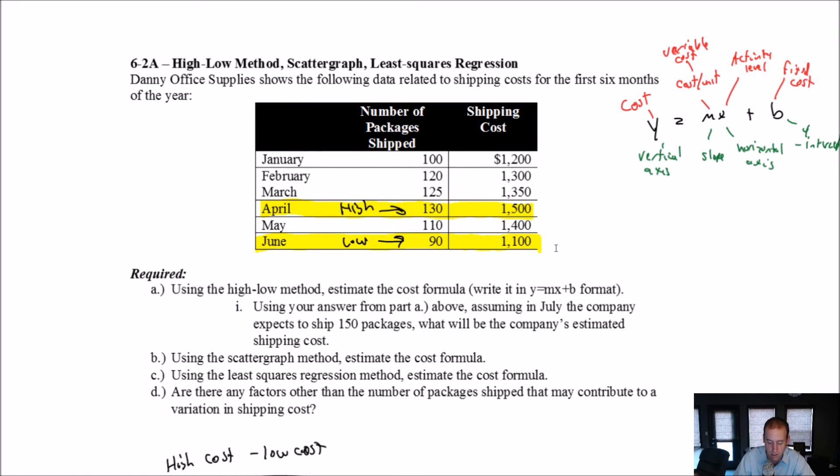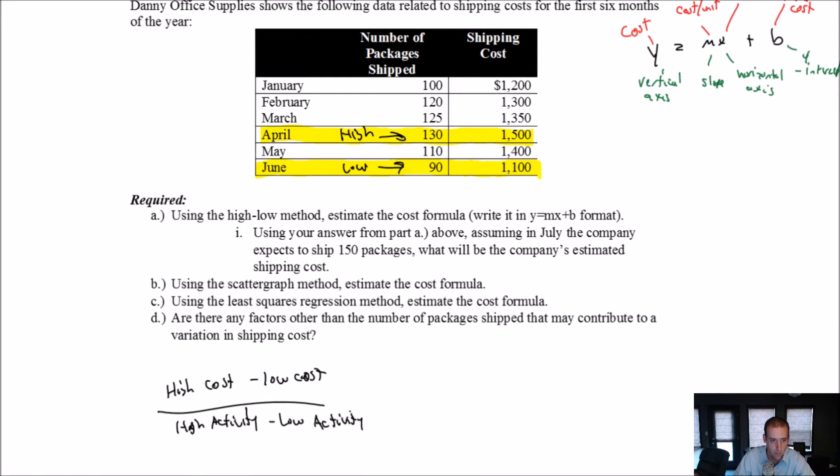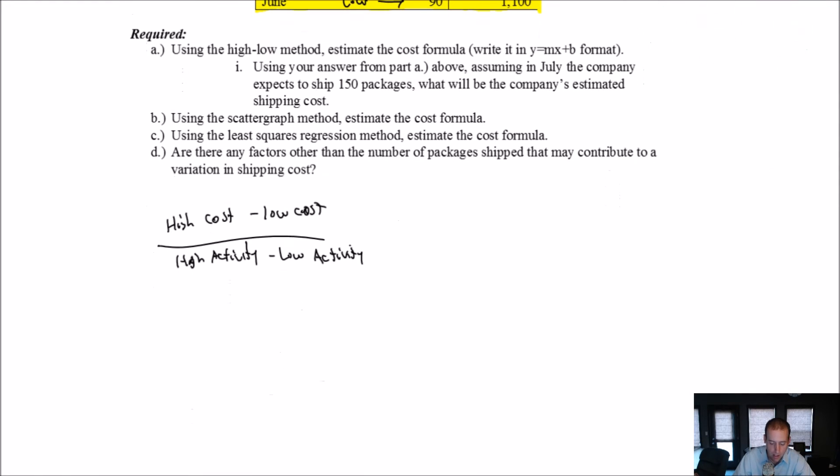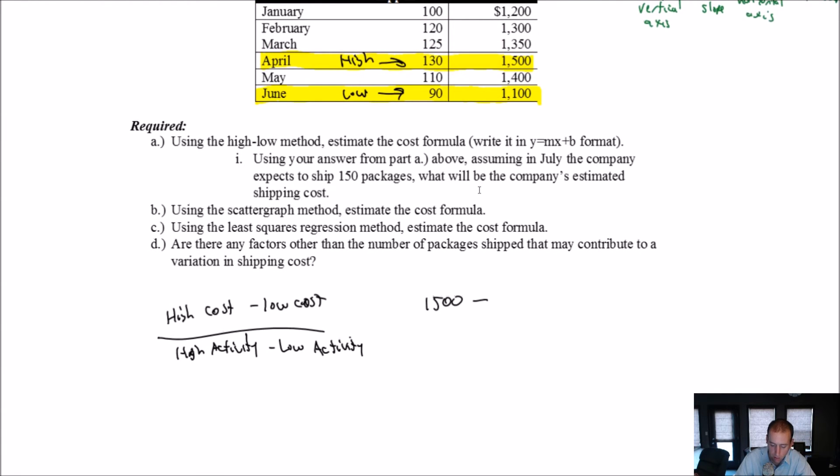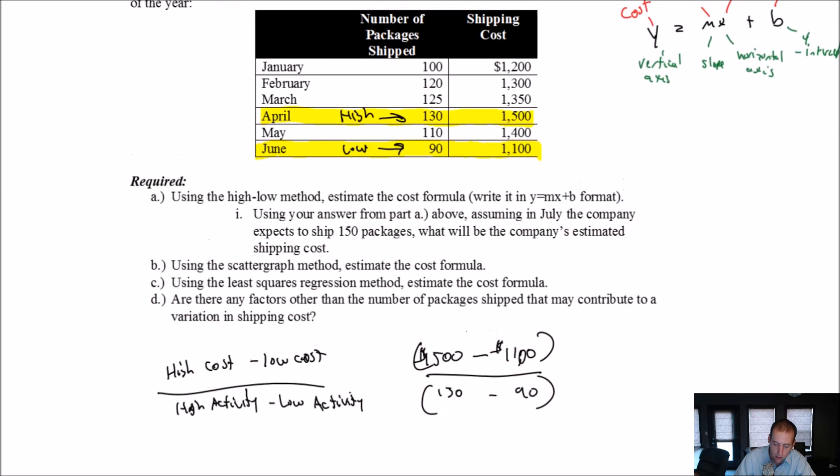So April and June are the only two months that matter. Now I take that high cost from April, and so that's $1,500. I deduct the low cost from June rather. That's $1,100. I divide by the high activity level from April, 130 packages, minus the low activity level from June, 90 packages. So $1,500 minus $1,100 divided by 130 packages minus 90 packages.